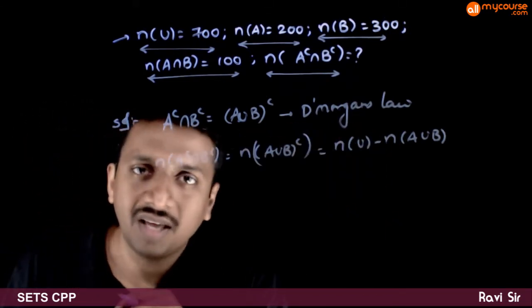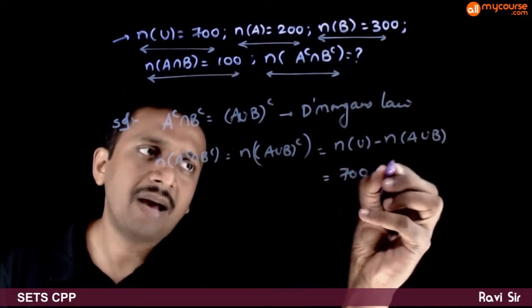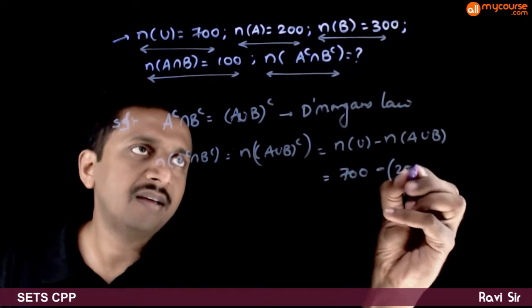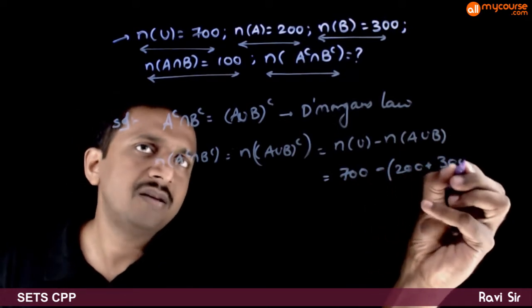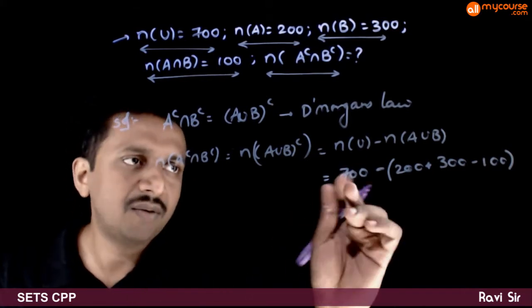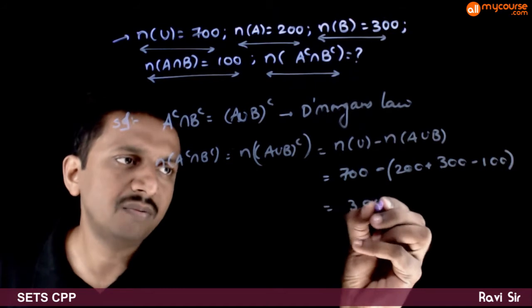N of U minus n of A union B. N of U is given as 700 minus what is n of A union B? N of A plus n of B minus n of A intersection B. That is equal to 700 minus 400 which is equal to 300.